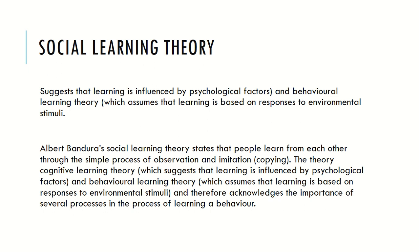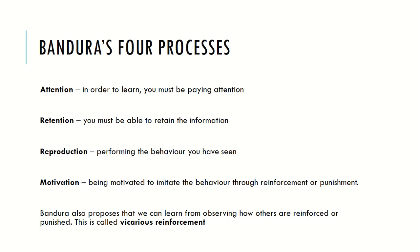Social learning theory suggests that learning is influenced by a mixture of psychological and behavioral learning factors. It states that you learn through simple processes of observation and imitation of role models. Bandura suggests that four processes are really important for social learning theory to occur, and how much you will imitate observed behaviors depends upon these things.